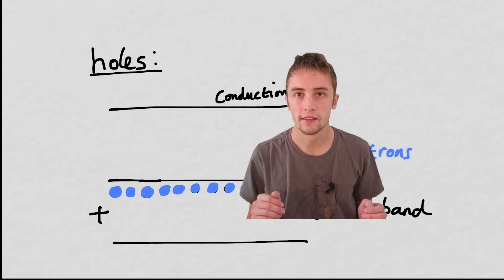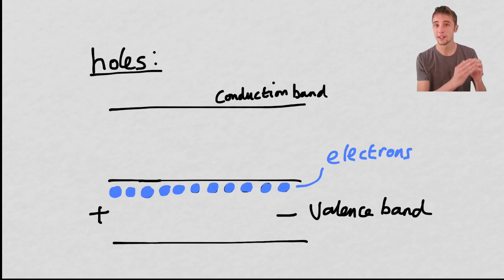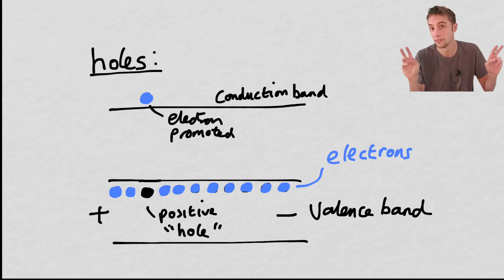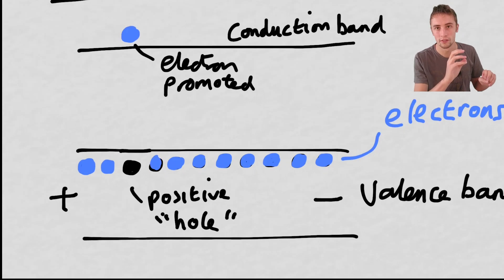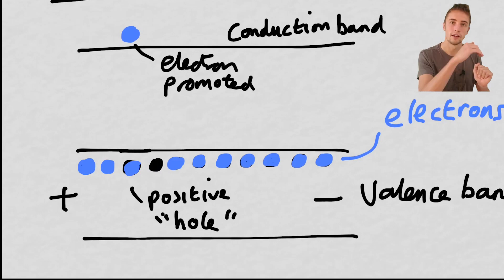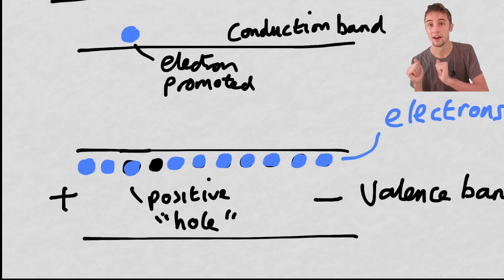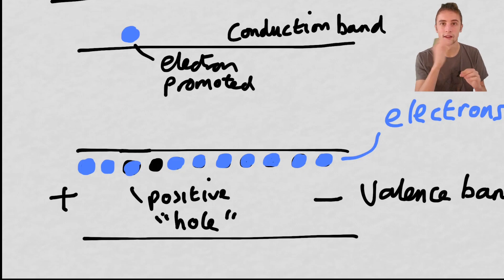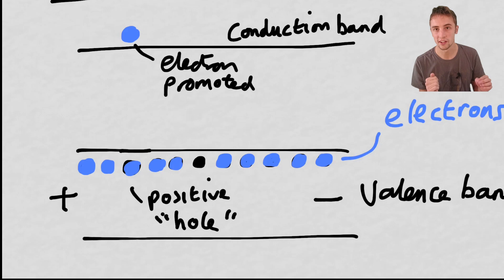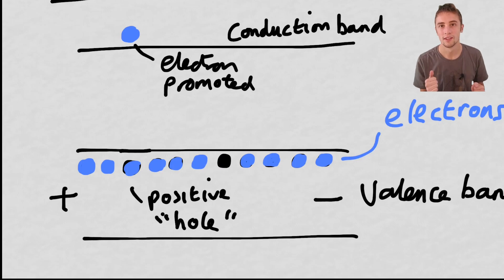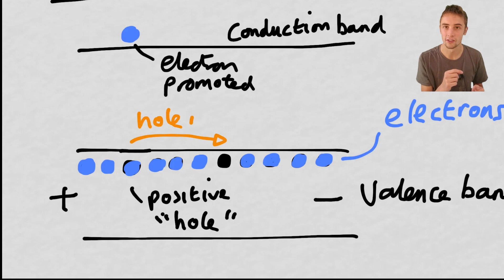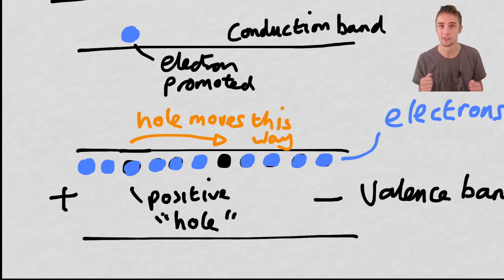Another concept to understand is conduction holes. When an electron leaves the valence band for the conduction band, it leaves behind a positively charged ion with a positively charged hole where the electron was. A neighbouring atom might donate an electron to fill that hole, leaving itself with a hole, and then the next neighbouring atom does the same. These positively charged holes move towards the negative end of the circuit — the cathode — essentially behaving like another charge carrier moving in the opposite direction to the electrons. So in semiconductors, you've got two charge carriers: holes and electrons.